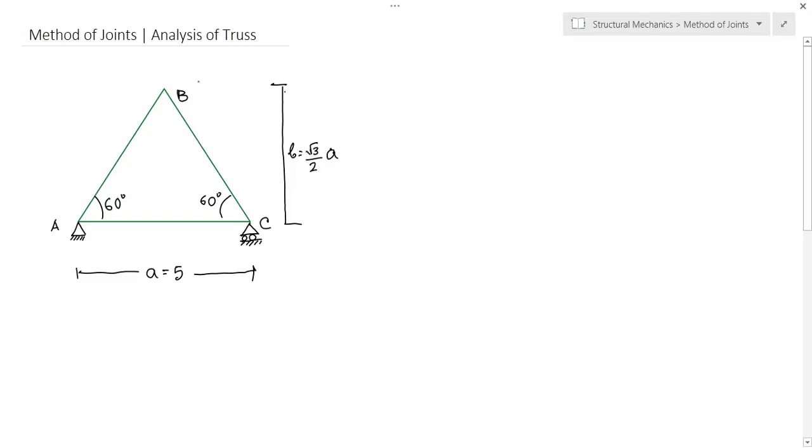Let the truss is loaded at the top joint. There is a vertical force of 5 kilonewtons and a horizontal force of 2 kilonewtons.